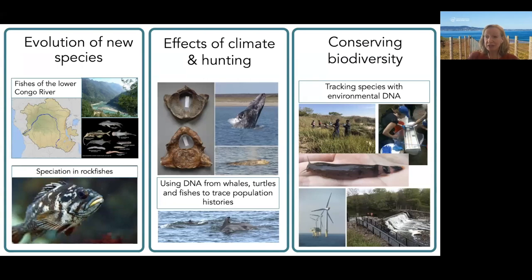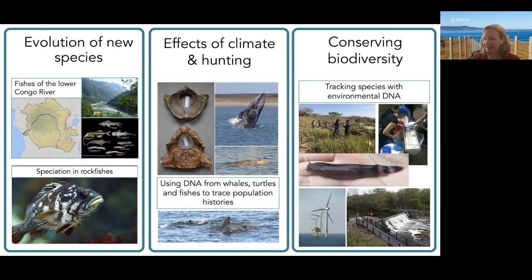My research focuses on three major themes, but today I'll focus on just the last one. Briefly: first, my lab uses genomic tools to understand how speciation occurs in fishes — we have a major project on rockfish evolution. Second, we use DNA from modern and ancient samples to trace how megafauna like whales and turtles are affected by human activities. And third — today's focus — we use environmental DNA, or eDNA, to track and survey biodiversity in human-impacted ecosystems.